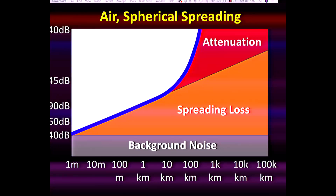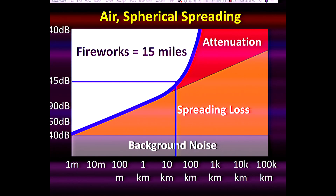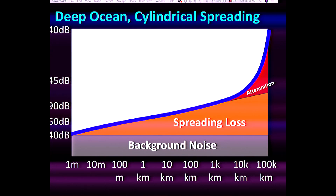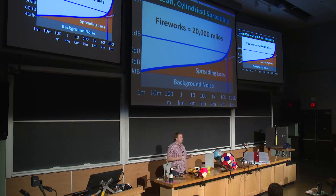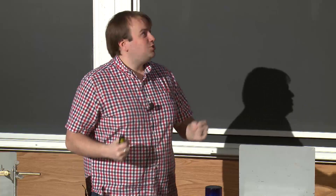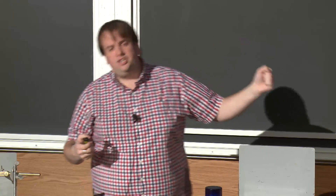Here's that plot again from before. For air with spherical spreading, fireworks at 145 decibels travel about 15 miles. Now let's redo this plot with ocean parameters. The attenuation is much smaller, and the spreading loss is now cylindrical instead of spherical — that orange wedge gets cut in half. That blue line indicating how far things travel goes much, much farther. For 145 decibel fireworks, sound now travels 20,000 miles instead of just 15 miles. That's phenomenal. For scale, the circumference of the Earth is about 25,000 miles. So this is huge, huge distances that sound is able to travel.